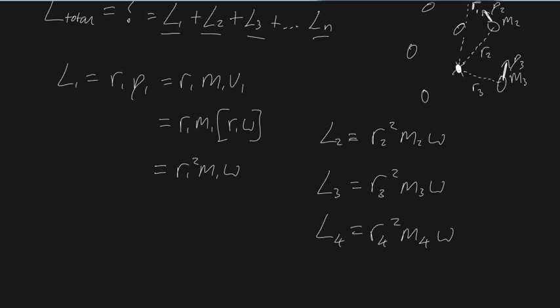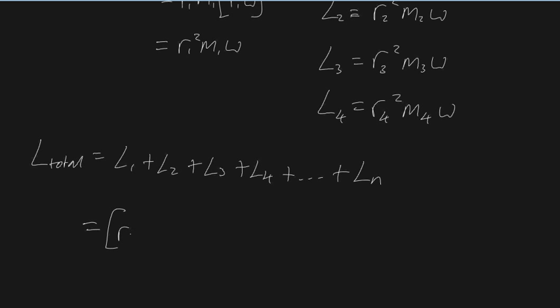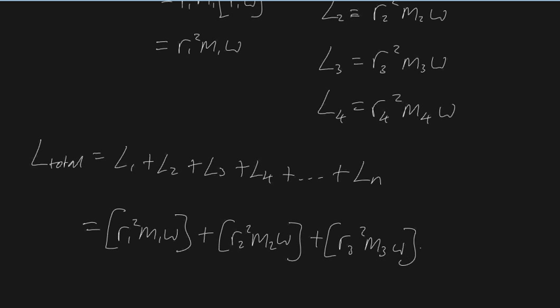So we've got our angular momenta L1, L2, L3, L4, all the way to Ln, and if we sum them all up we'll get our total angular momentum. L_total = L1 + L2 + L3 + L4 + ... + Ln. Substituting: L1 = r1²m1ω, L2 = r2²m2ω, L3 = r3²m3ω, all the way to Ln = rn²mnω.